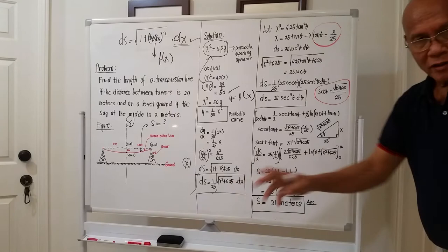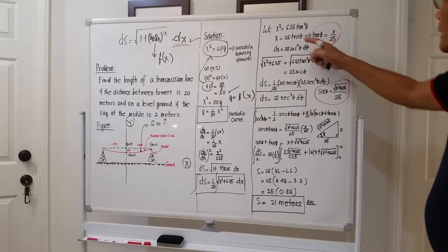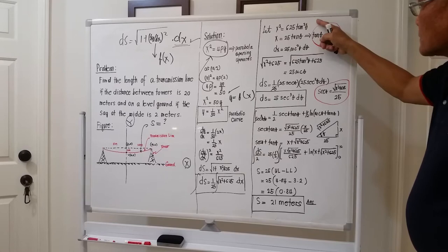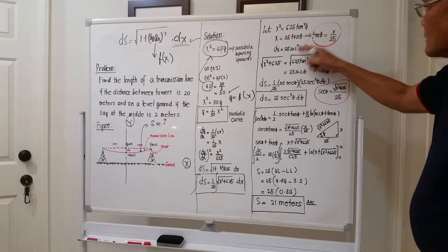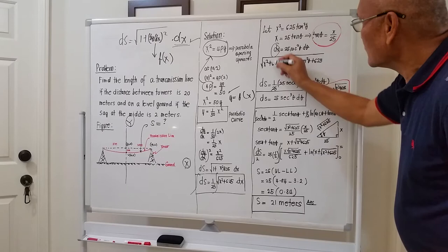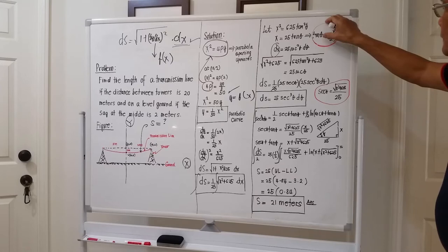To integrate this, we use trigonometric substitution. Let x² = 625·tan²(θ), which is a perfect square. Taking the square root: x = 25·tan(θ). Taking the differential: dx = 25·sec²(θ) dθ. From this substitution, tan(θ) = x/25 — we will need this value of tan(θ) later.